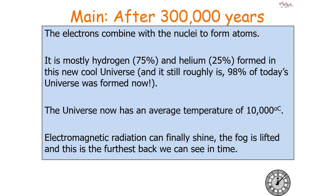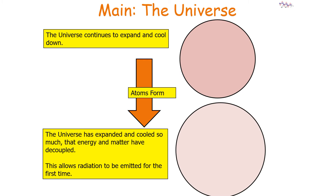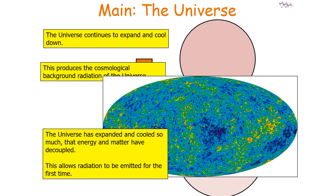After 300,000 years, electrons combine with nuclei to form atoms, mostly hydrogen and helium — roughly the same ratio as today. The universe now has an average temperature of 10,000 degrees Celsius, and electromagnetic radiation can finally shine. This is the furthest back we can see in time. This allows radiation to be emitted for the first time, which produces something called the cosmic microwave background.